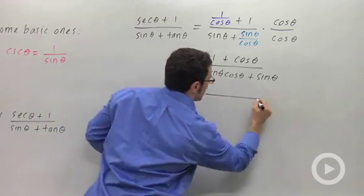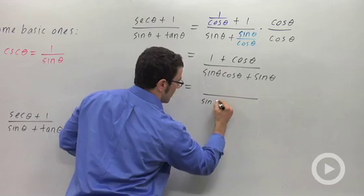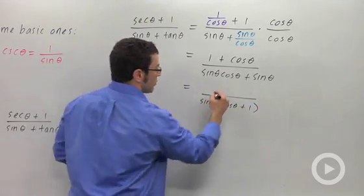And this is really good because, notice, I can factor a sine theta out of the bottom. And I'm left with cosine theta plus 1, which is exactly what I have in the numerator.